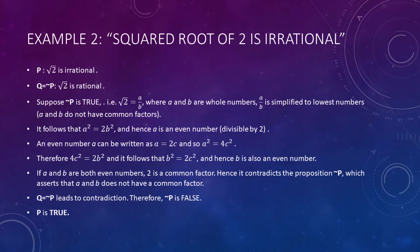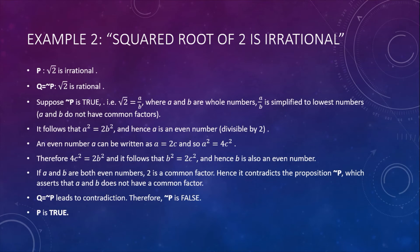Which means it's a fraction that can be written as a/b where a and b are simplified to lowest terms, so they do not have common factors. But we can write that a² = 2b². Hence a itself is an even number.